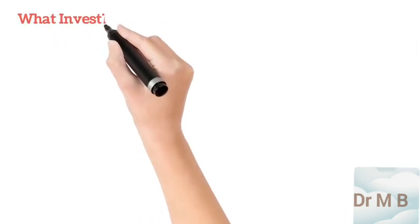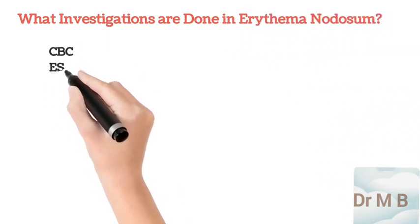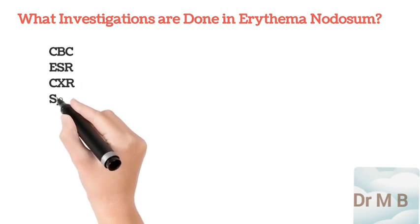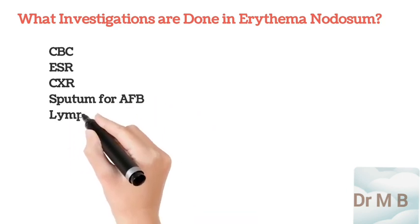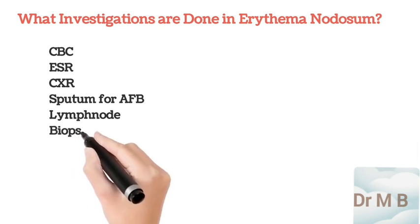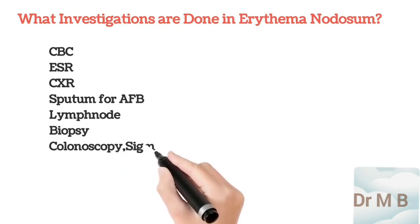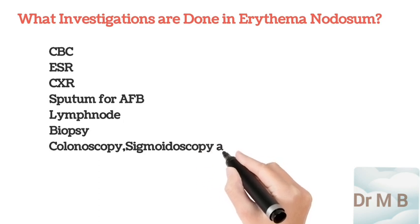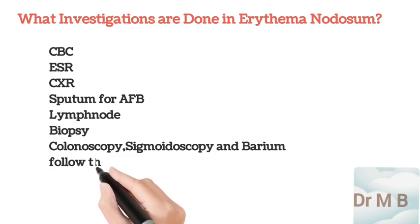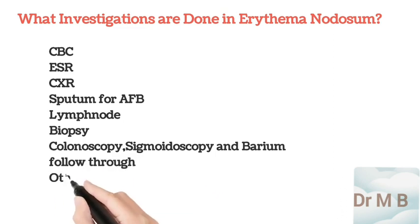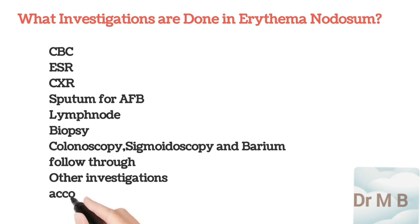To investigate a case of erythema nodosum, advise a complete blood count, ESR, and chest X-ray to look for tuberculosis and sarcoidosis. Send sputum for AFB if a productive cough is present. Perform lymph node biopsy for lymphadenopathy. Do colonoscopy, sigmoidoscopy, or barium follow-through if the patient presents with bloody stool or abdominal pain. Other investigations should be done according to the suspected cause.